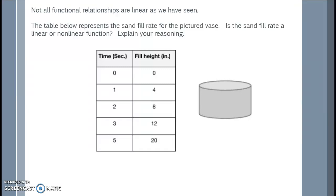As we have seen in the past couple of examples, not all functional relationships are linear, meaning they're not a straight line. The table below represents the sand fill rate for the pictured vase. Is the sand fill rate a linear or nonlinear function? Explain your reasoning.